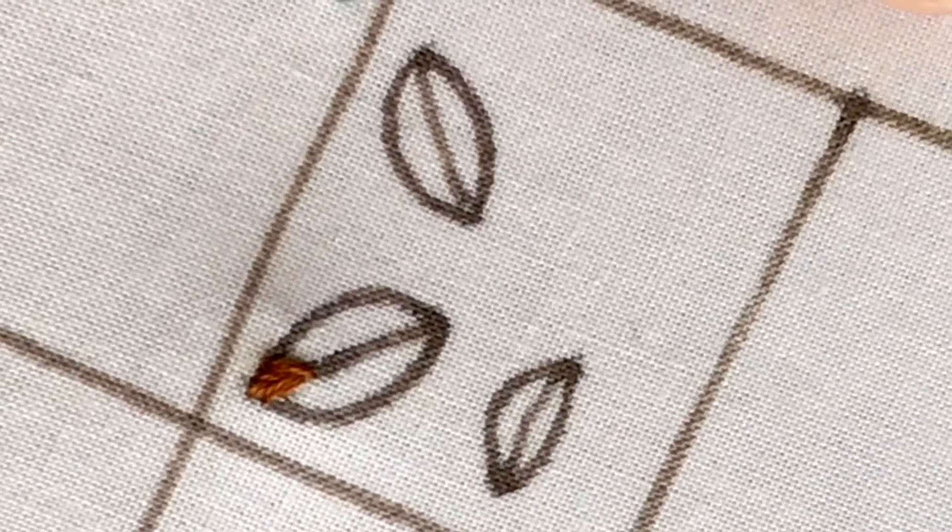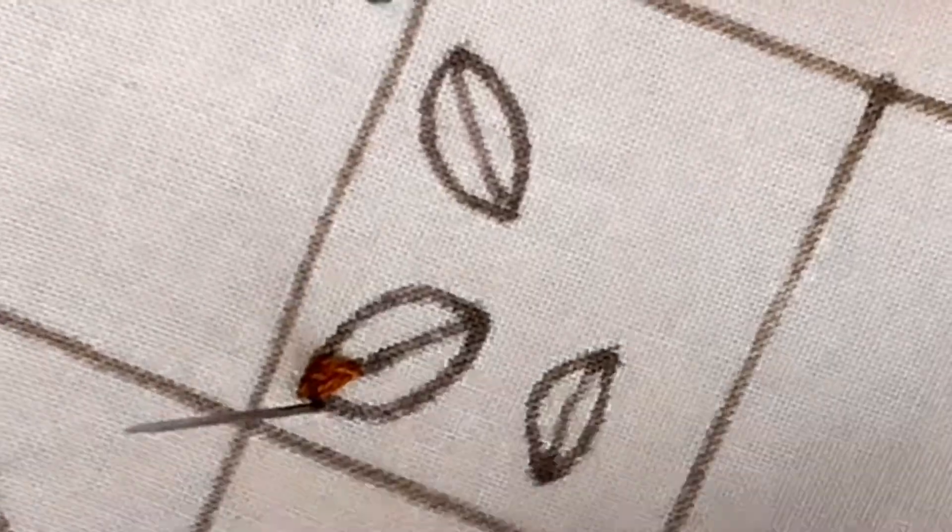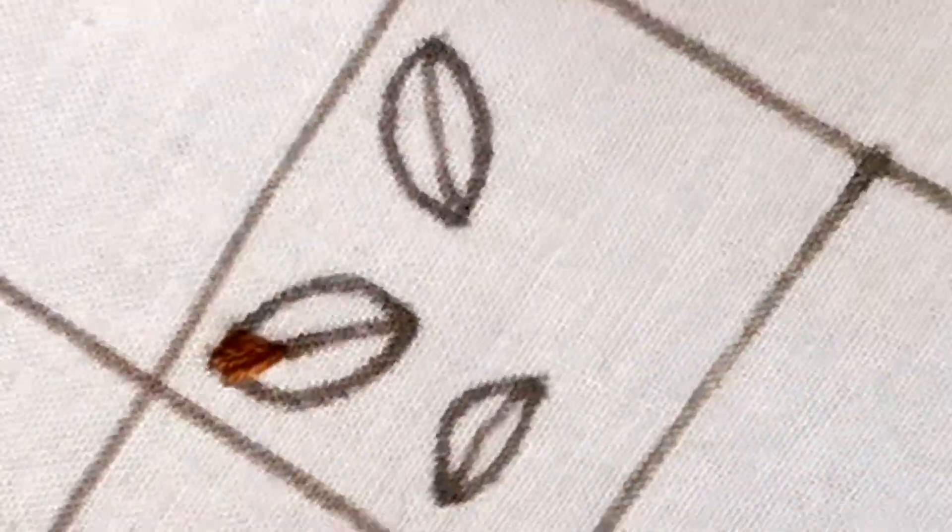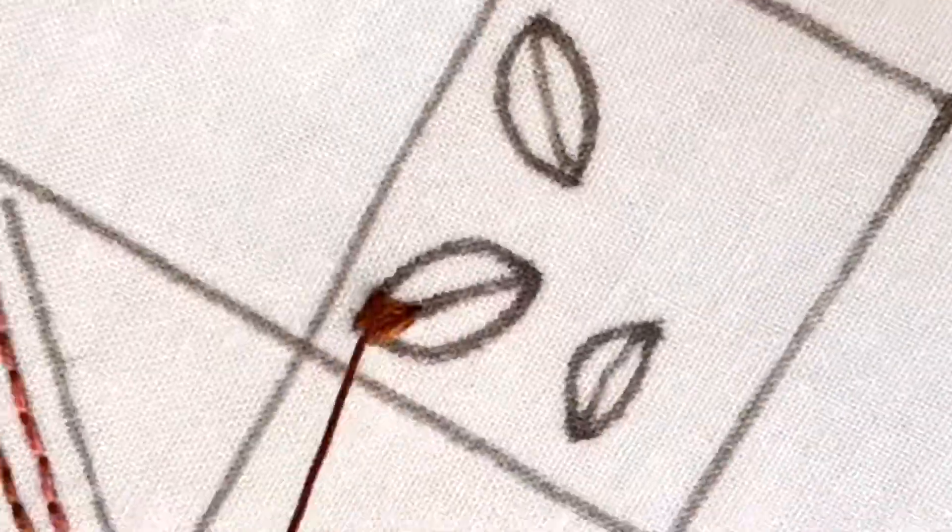So we're going to keep doing this method to create a spine in the center of the leaf. I'm going to speed it up here in just a moment. And you can see that it's already starting to create a little bit of definition in the middle of the leaf.